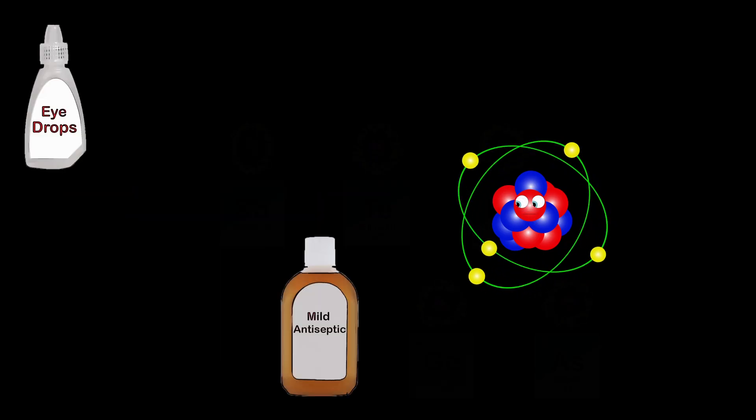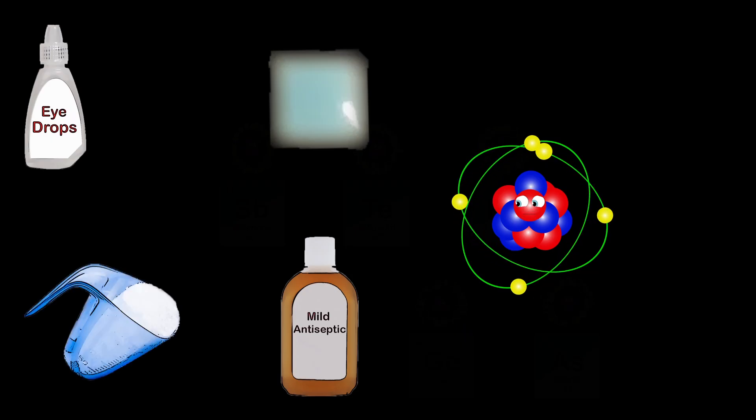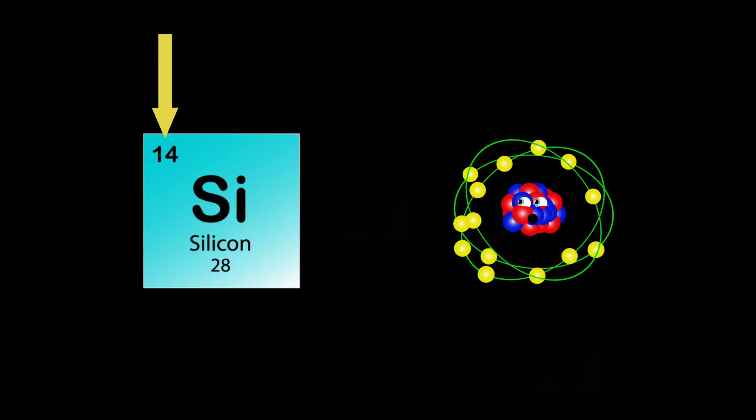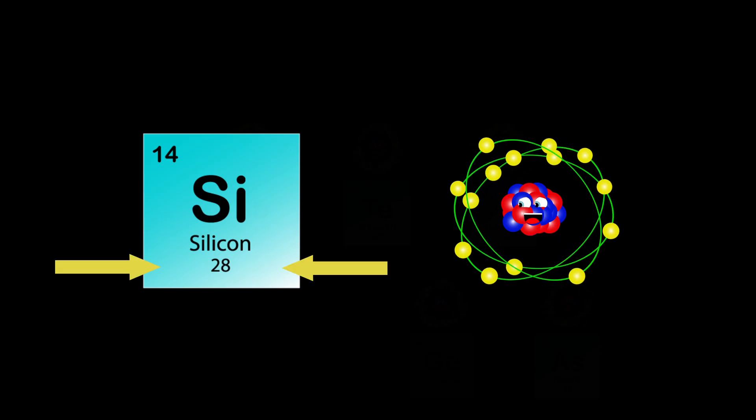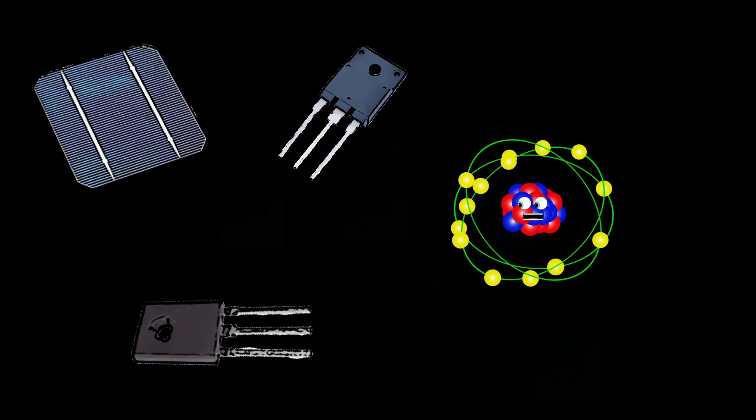I am Silicon, my atomic number is 14. My atomic mass is 28, Si is my symbol that beams. I'm one of men's most useful elements for what I can do. I'm used in transistors, solar cells, rectifiers, and electronics too.